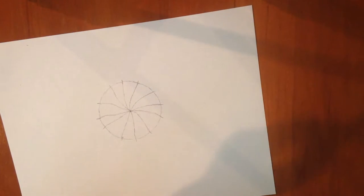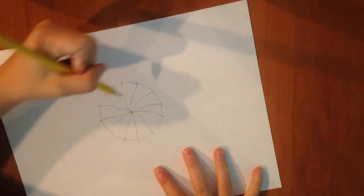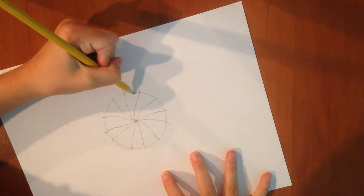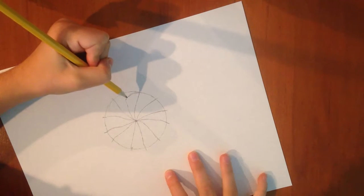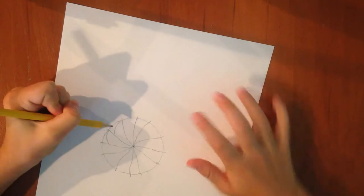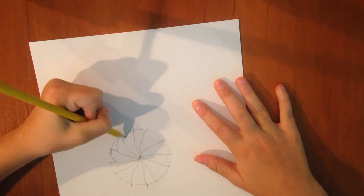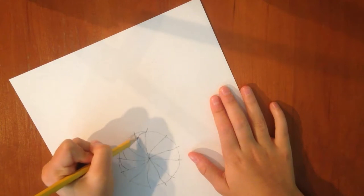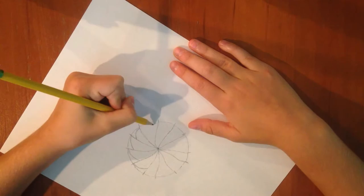Alright, now we're going to draw a line from right at the top of the circle. And go down like that. And we're going to do that to every single little section. And you're going to want to leave some space right here for the shading.